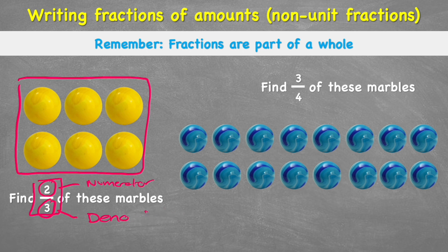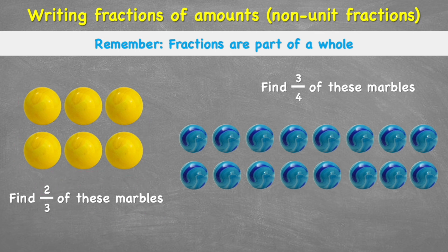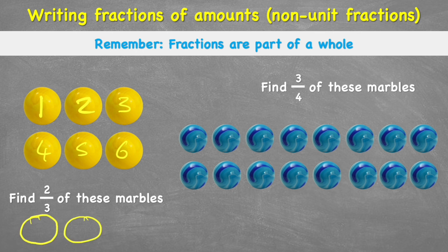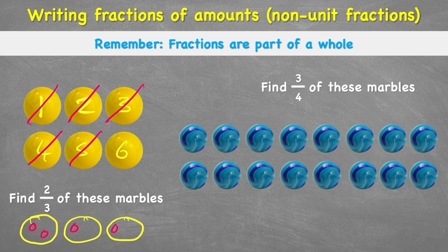That might sound a little bit complicated, so let's see it in practice. I have six marbles, and to find two-thirds of them, I need to split them into three equal piles. So I'm going to put my three sharing circles out — one, two, three — and then simply share them into these three circles. I'll put number one in here, number two in here, number three in here, number four back in the first one, number five in the second, and number six in the third. I just need to make sure I have the same amount in each one: two in here, two in here, and two in here. So I've done that right.